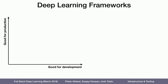Deep learning frameworks can roughly be thought of on two axes: how easy is it to develop in this framework — that's on the x-axis, good for development — and then once you develop a model, how easy or how scalable is it when you actually put it in production? That's on the y-axis.